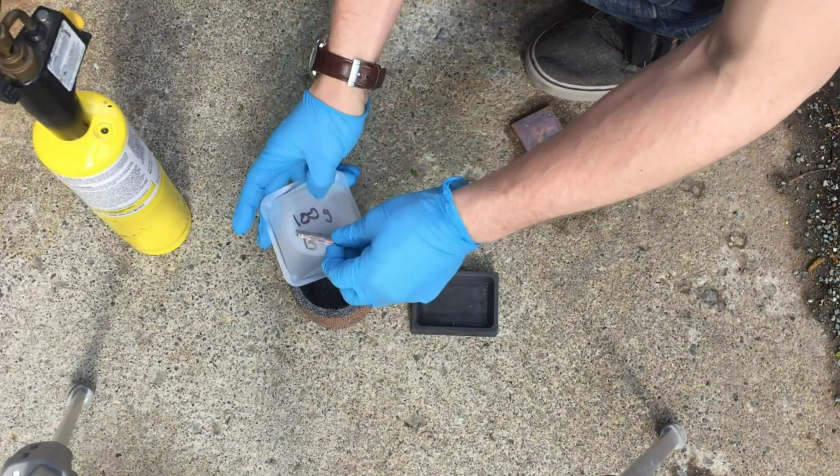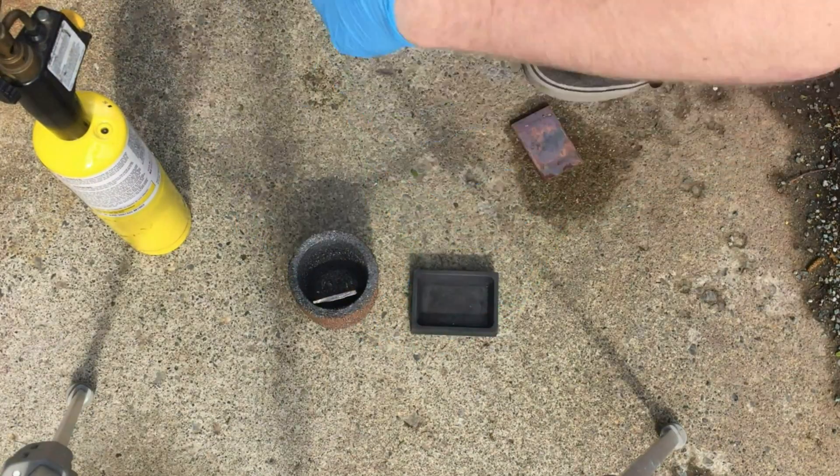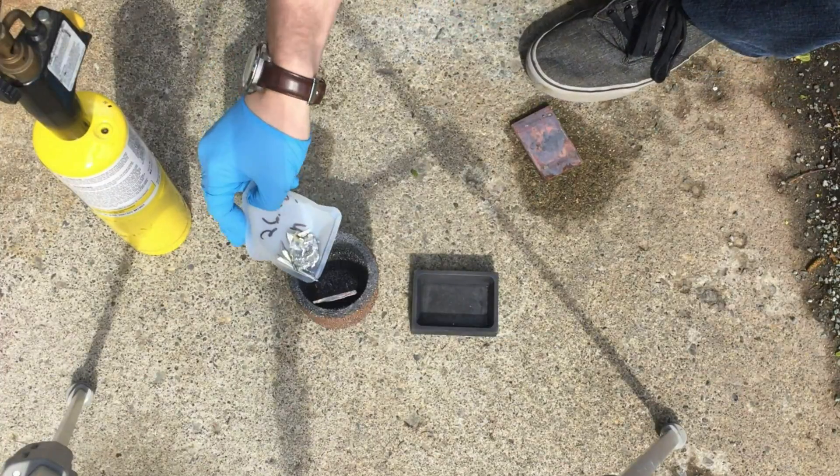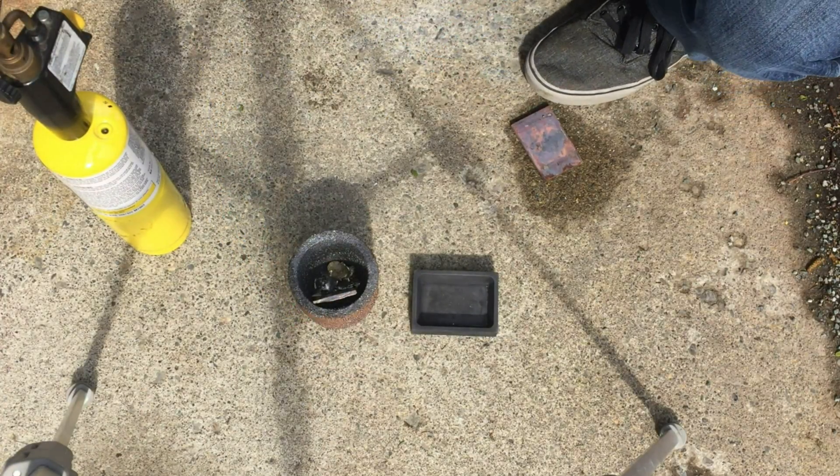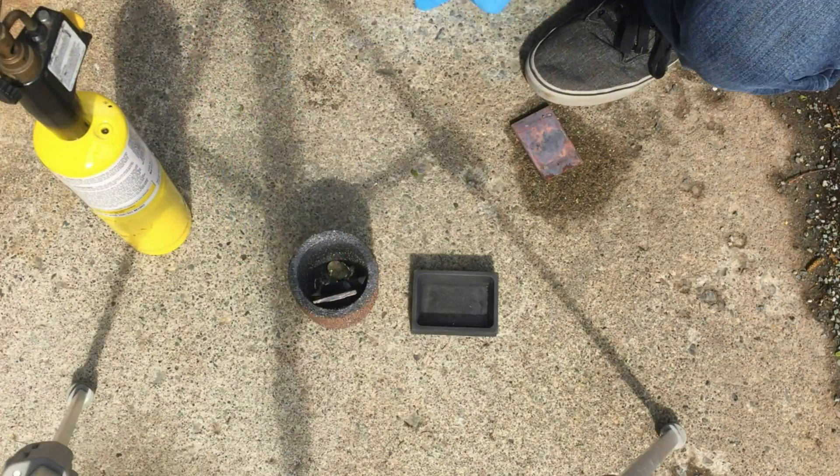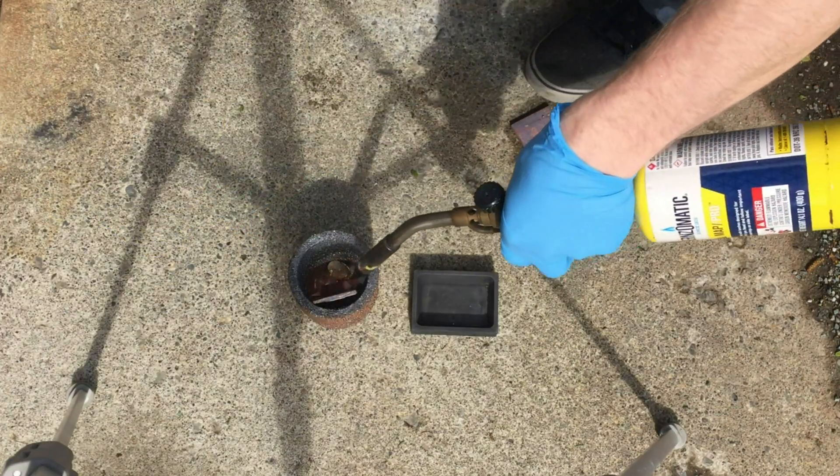After everything was prepared, all of the metals were transferred to my graphite crucible and heated until they melted together. The metals were subsequently sloshed around to ensure good mixing and then poured into a preheated graphite ingot mold.